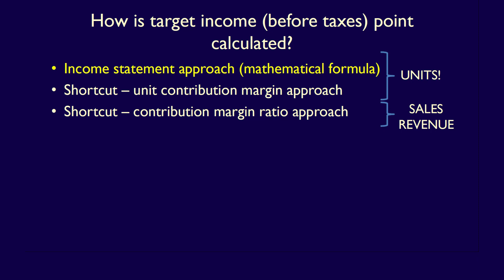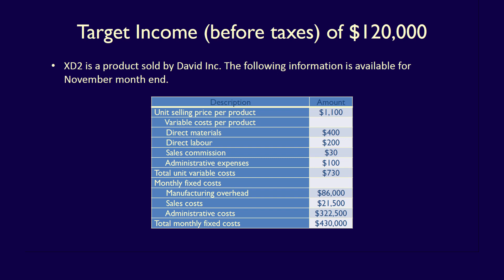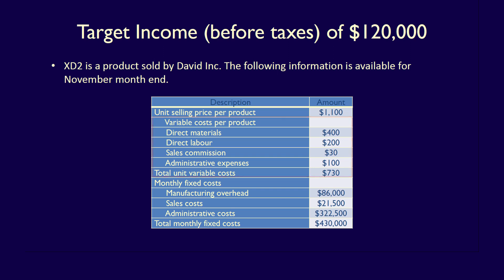We'll start with the income statement approach using David Inc., a company which manufactures XD2. For the month of November, the selling price per unit is $1,100. Variable costs per unit include: direct materials of $400, direct labor of $200, sales commission of $30, and administrative expenses of $100, giving a total variable cost per unit of $730. Monthly fixed costs are manufacturing overhead of $86,000, sales costs of $21,500, and administrative costs of $322,500, totaling $430,000.